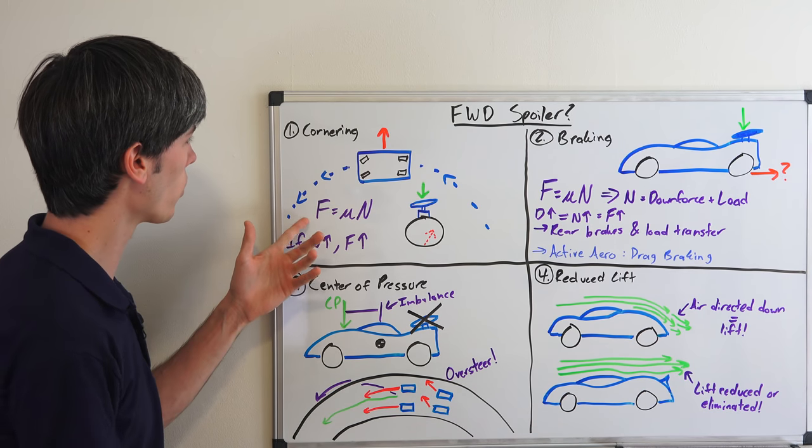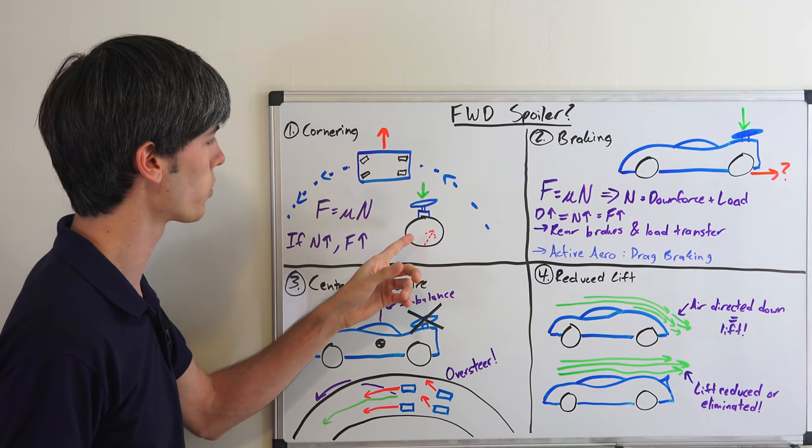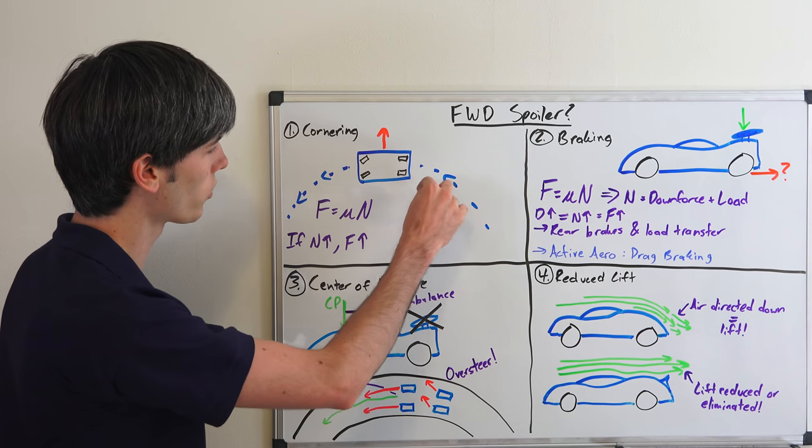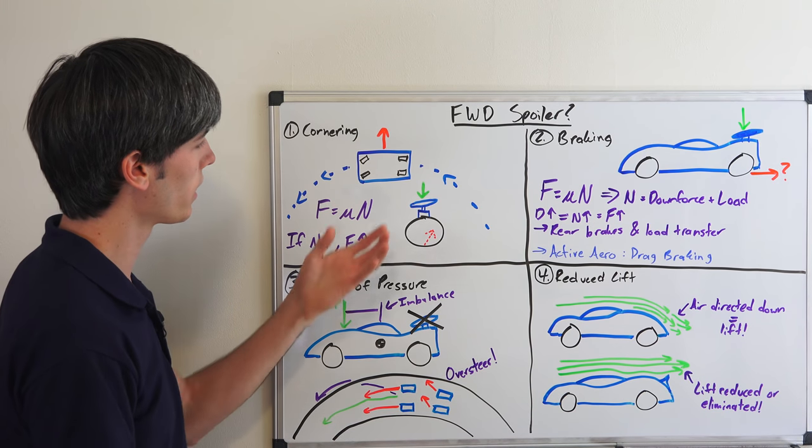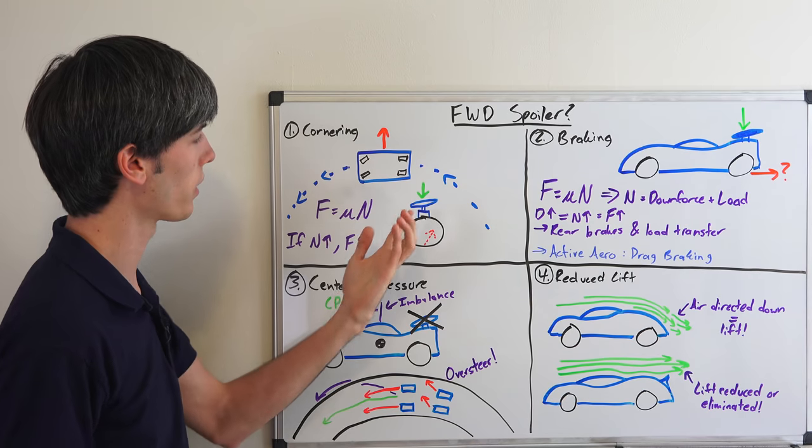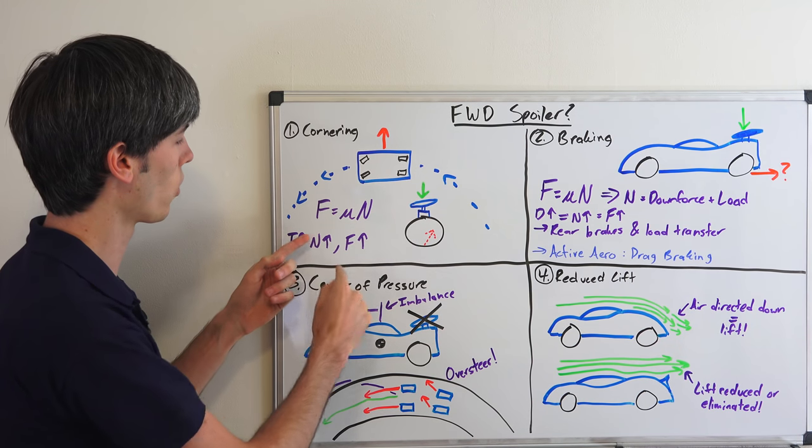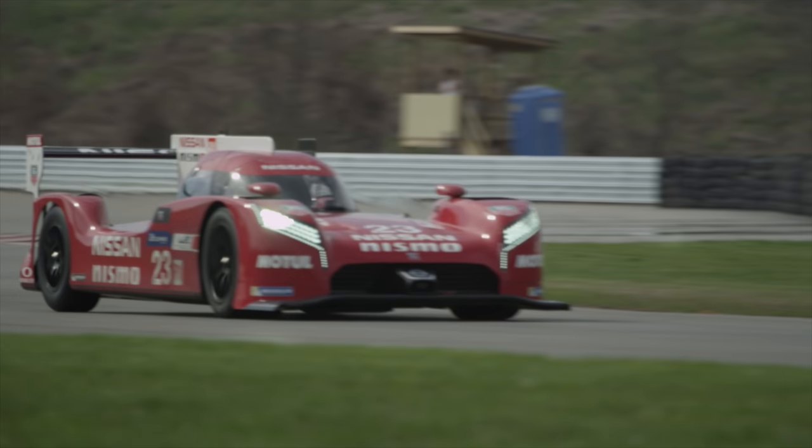The cornering force that this vehicle can hold is equivalent to the coefficient of friction between the tire and the ground multiplied by the normal force, in other words the weight of the car. So you've got this force pushing down on the vehicle, the weight of the car. And if you add to that normal force with downforce, you have more force pushing down on this. So if your normal force goes up, then the force that the car can corner with goes up. Simple as that—better cornering with a spoiler on a front wheel drive vehicle.